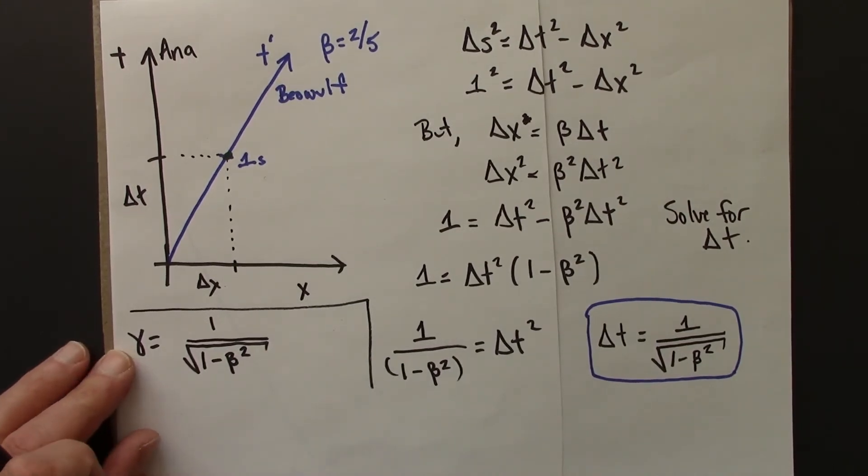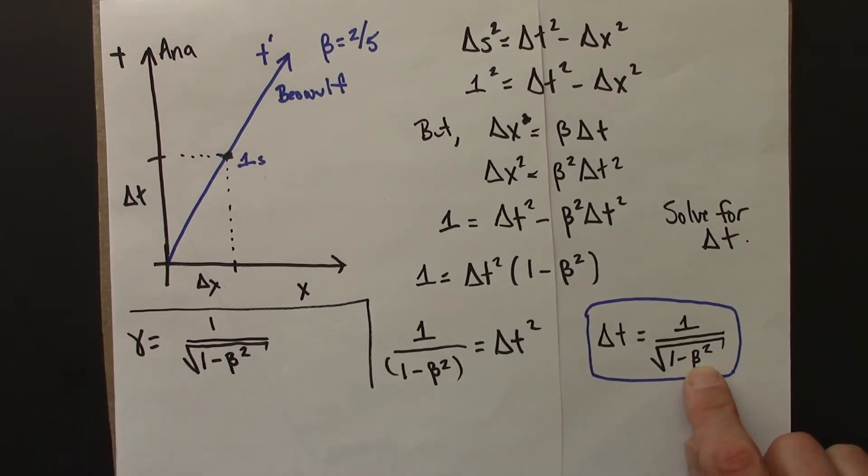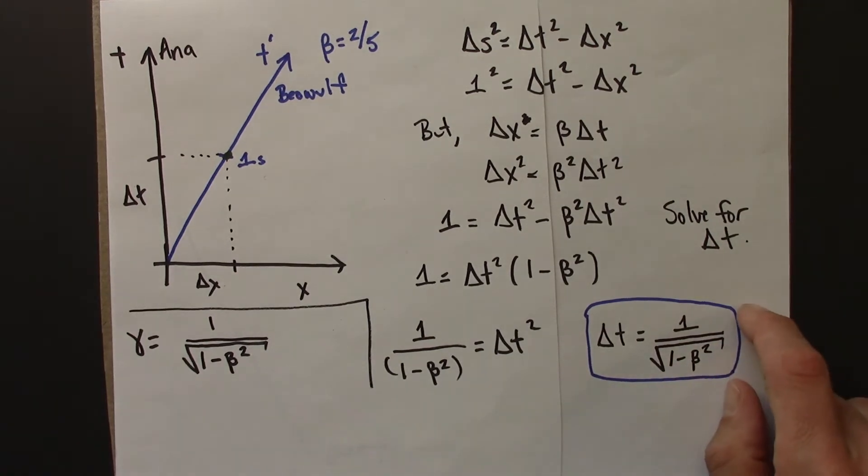And gamma is a number always greater than 1. Let's think about why that's so, then we'll plug in a number. Beta is a number between 0 and 1. It's a special relativity speed. 1 minus something between 0 and 1 is going to be smaller, a number between 0 and 1. Square rooting a number between 0 and 1, still a number less than 1. 1 over a number less than 1 is greater than 1.